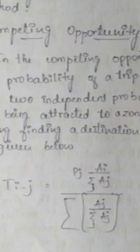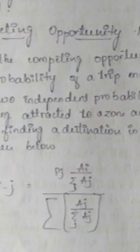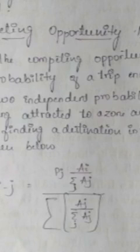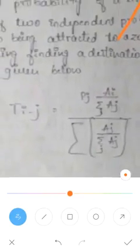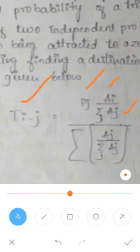The model takes the product of these two: the probability of trips being attracted to the zone and the probability of trips finding the destination in the zone. This is expressed in the mathematical relation: D_ij equals P_j times A_j divided by the summation of A_j.